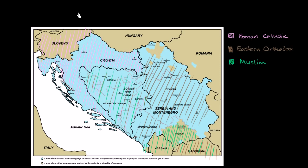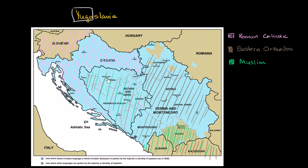First of all, it's a good idea to understand where the word Yugoslavia comes from. It's literally referring to the southern Slavic states. Yugo is referring to southern, and Slavia refers to the Slavic states. When people talk about Slavic languages, they're talking about the languages that are spoken in this region, but also much of Eastern Europe and in what is now Russia.